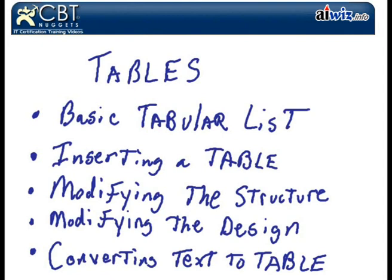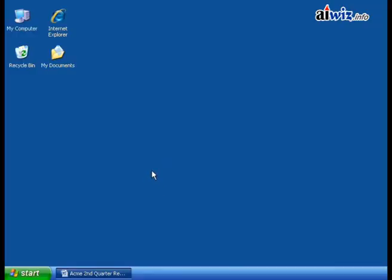Modifying the structure — do you want more columns? Do you want more rows? How do you want them to fit together? And then modifying the design — things like shading and borders. You can adjust those. And then, finally, we're going to take a look at how we can just take plain old text that's sitting somewhere, whether it's in Notepad or here in Word, and we can convert it into a table. So, let's get started with these tables.